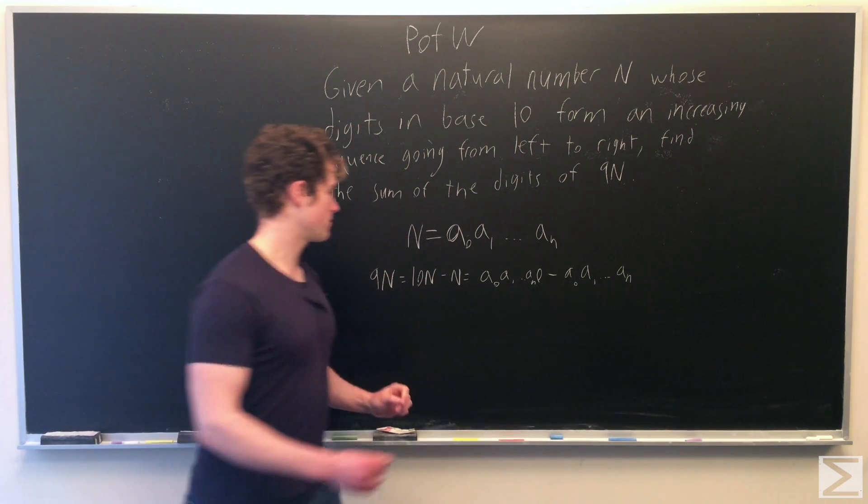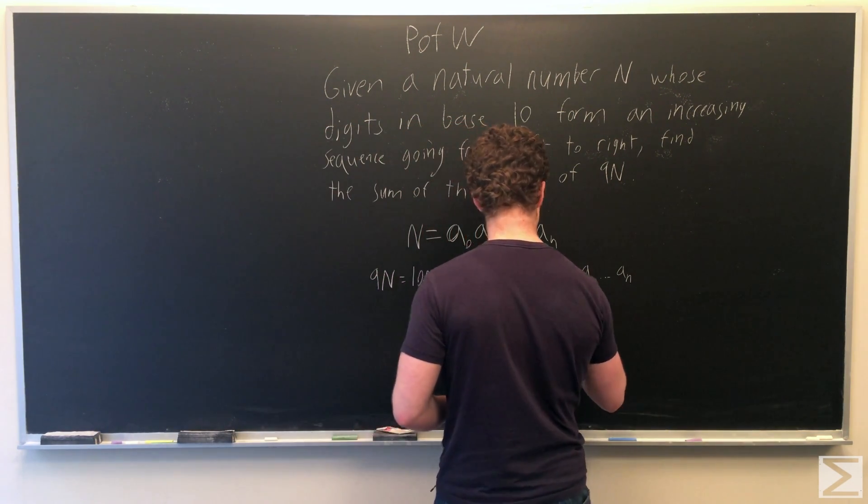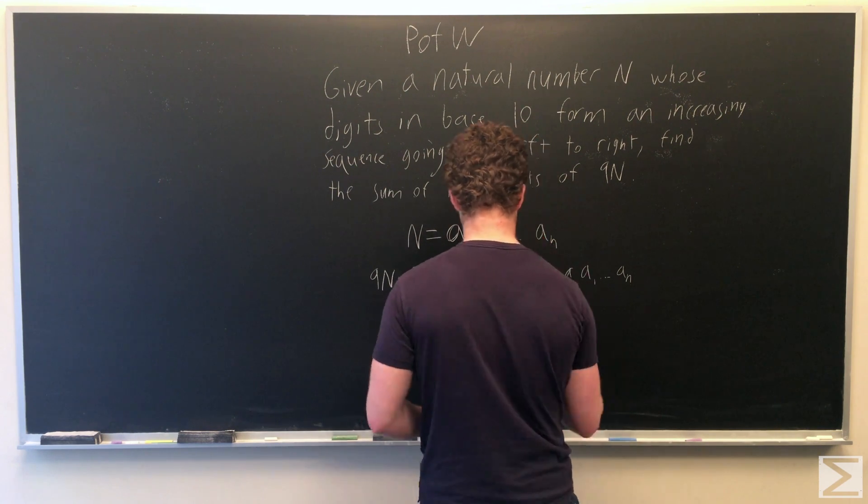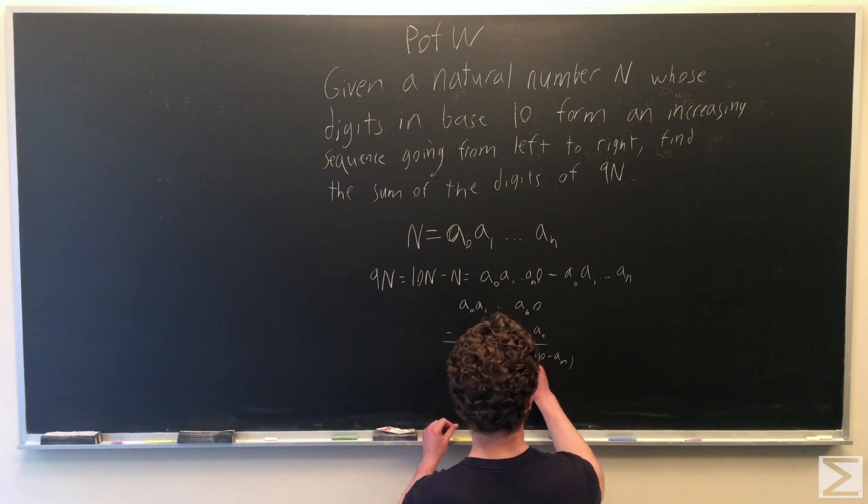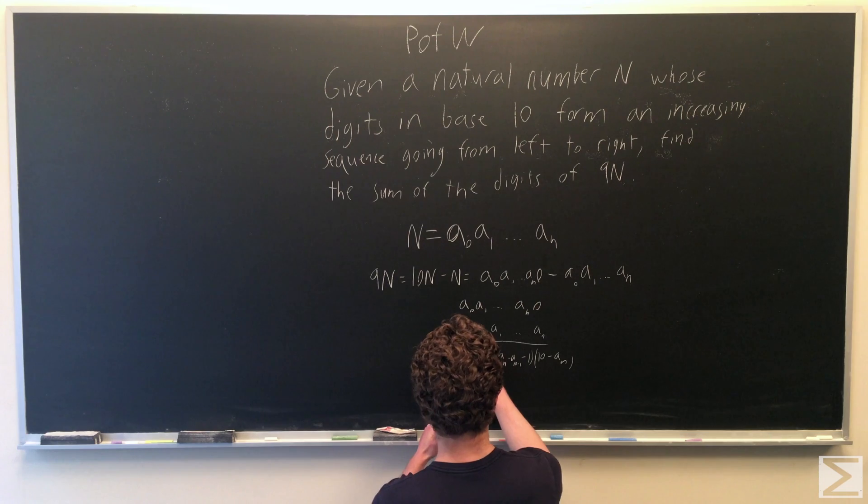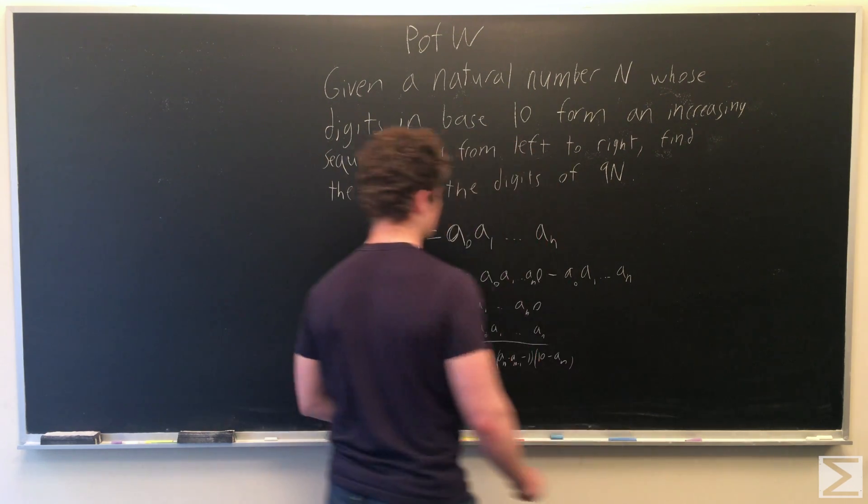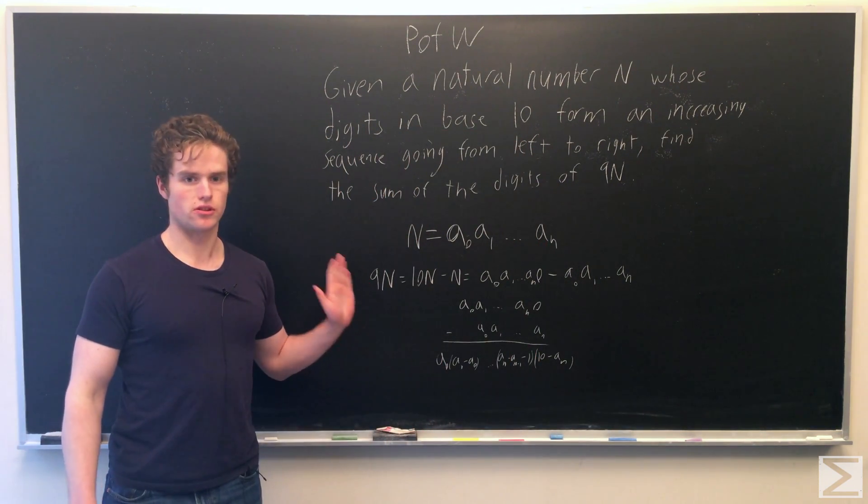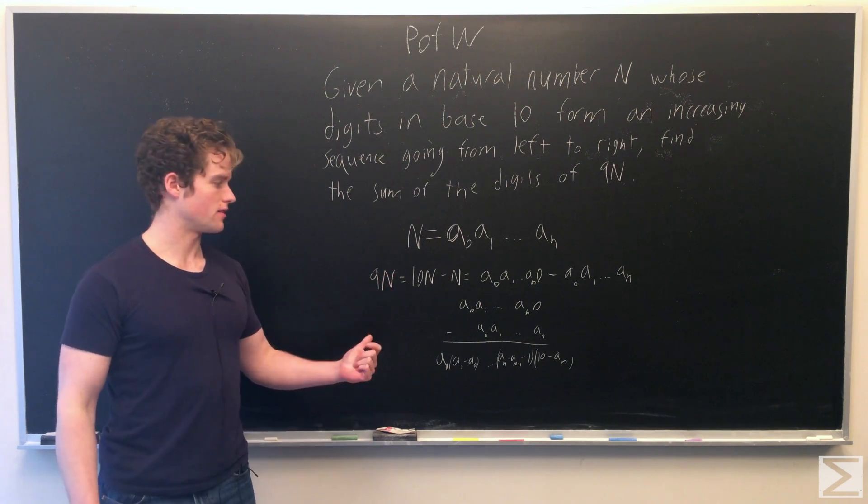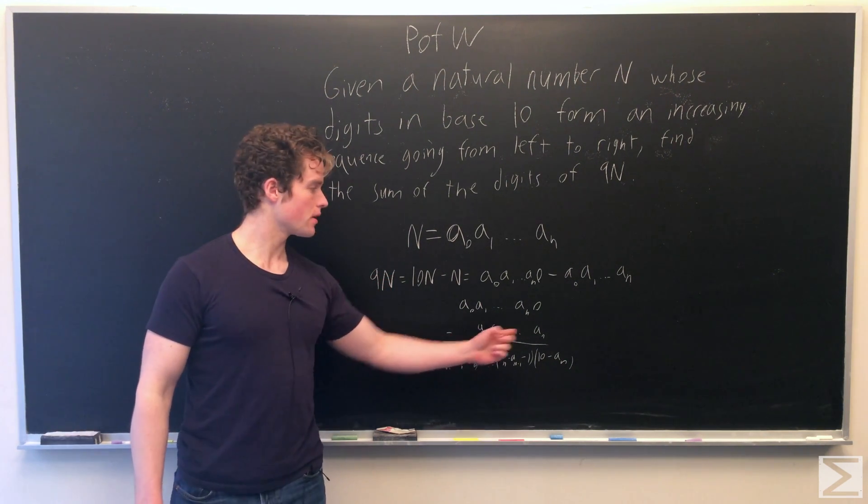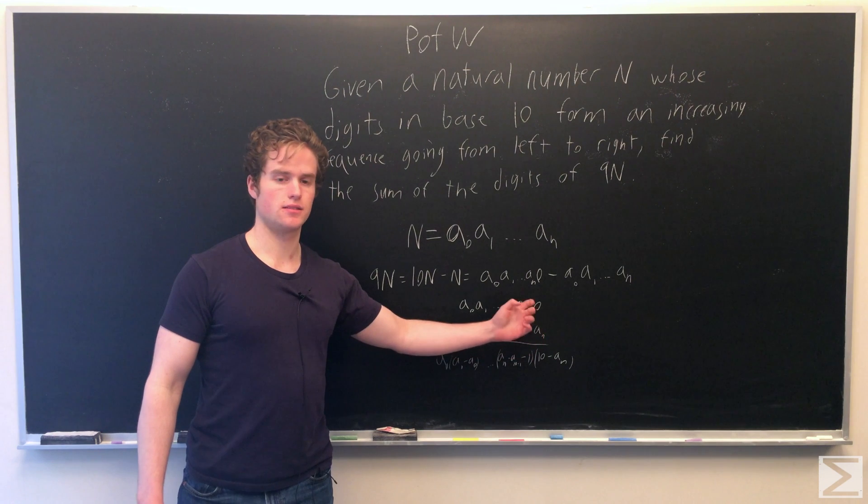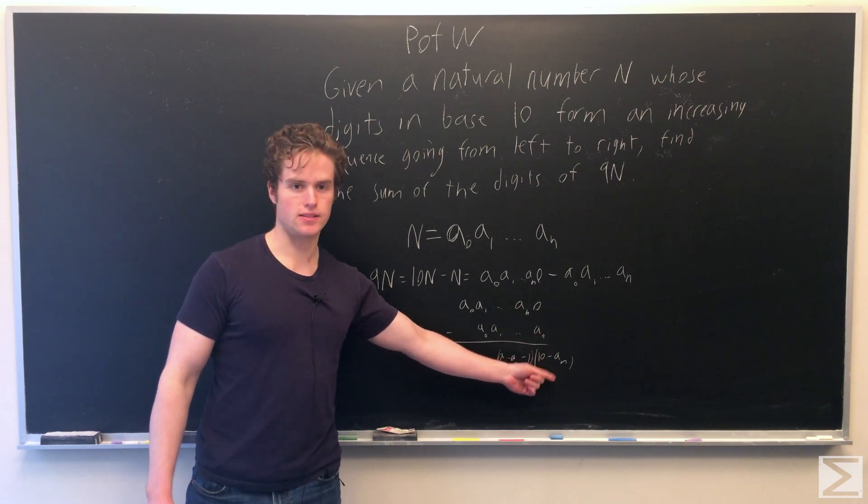So then if we subtract, we can note that our requirement that the digits are increasing from left to right significantly simplifies our subtraction here. So 0 minus an will give us 10 minus an as a digit here.